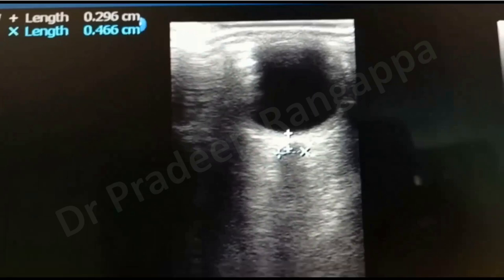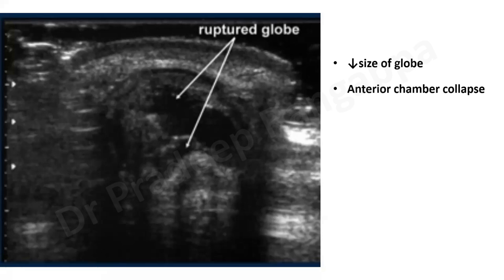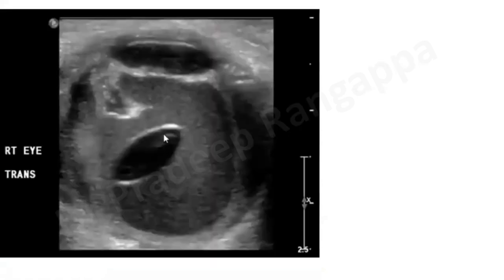This is a very simple test and every trainee can do it at the bedside. Beyond optic nerve sheath diameter, when doing ocular ultrasound you may also identify other pathology. If you see a collapsed globe with a displaced lens and reduced chamber size with smuggling of the sclera, that is a ruptured globe. And if you see a lens that is dislocated from its normal position displaced into the posterior chamber, that indicates lens dislocation.